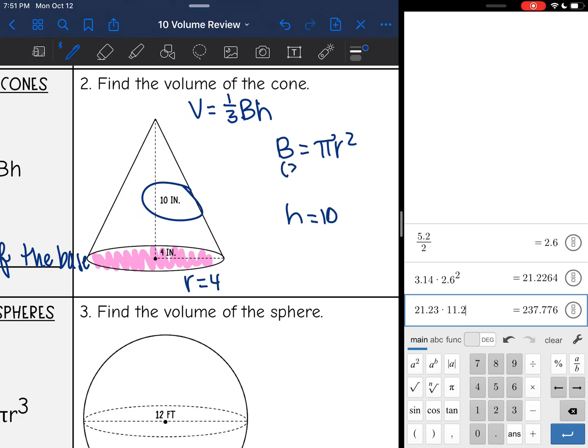So for the area of the base, I'm going to do 3.14 times 4 squared, and 3.14 times 4 squared is 50.24.